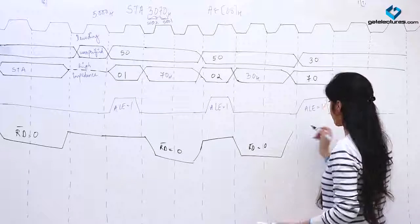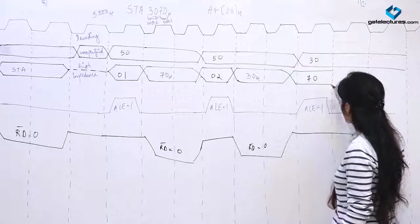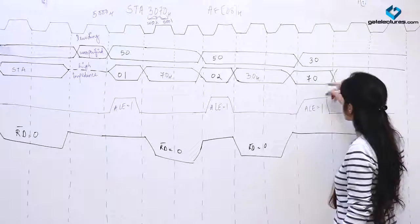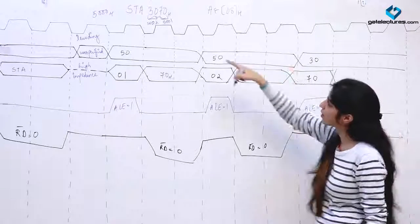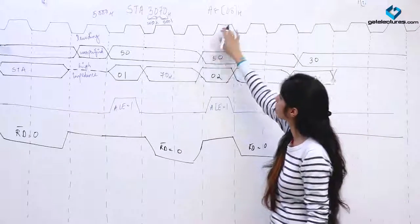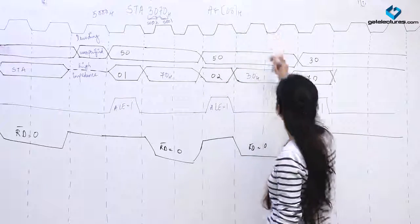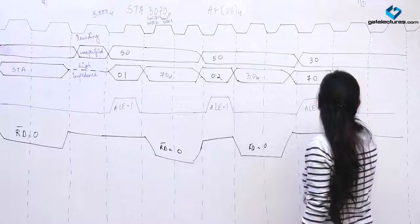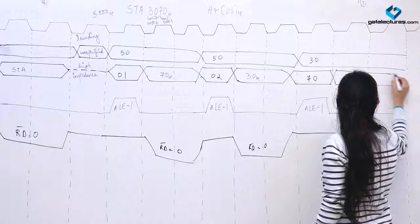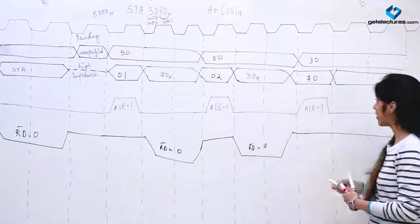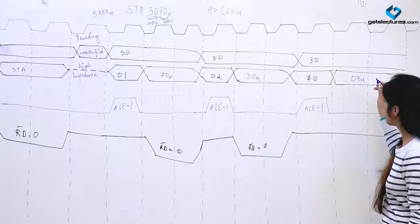Nothing is to be read, so read-bar is going to be high. When we reach location 3070 we wish to write the contents of the accumulator. The contents of the accumulator were 08. So we are going to place 08 on the data bus.